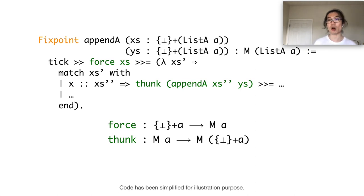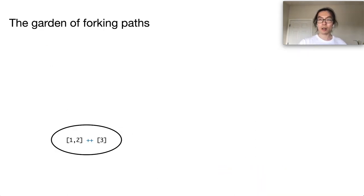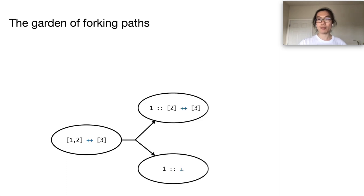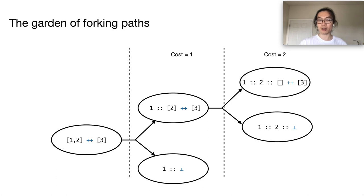What the thunk operation does is forking the computation into two different branches. It suspends the computation on one branch, and continues the computation on the other branch. This is the key for implementing non-determinism. In this way, the evaluation of the function becomes a garden of forking paths where different possibilities of demands are enumerated.